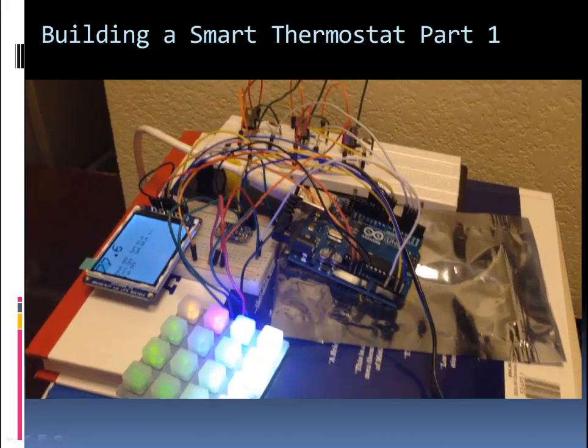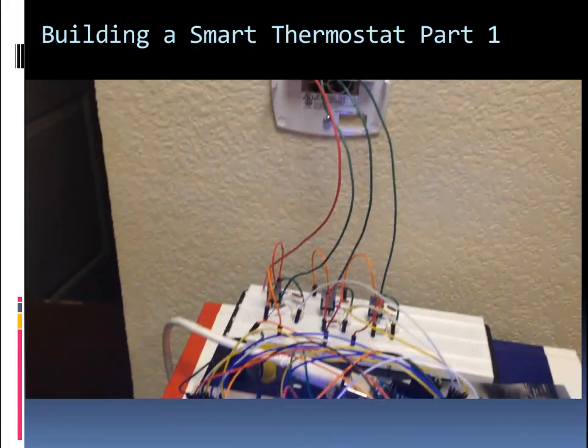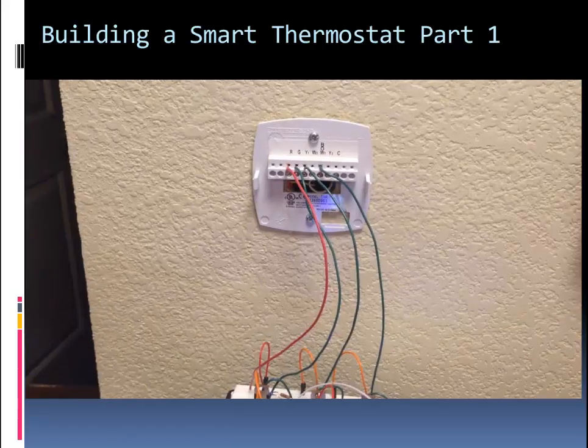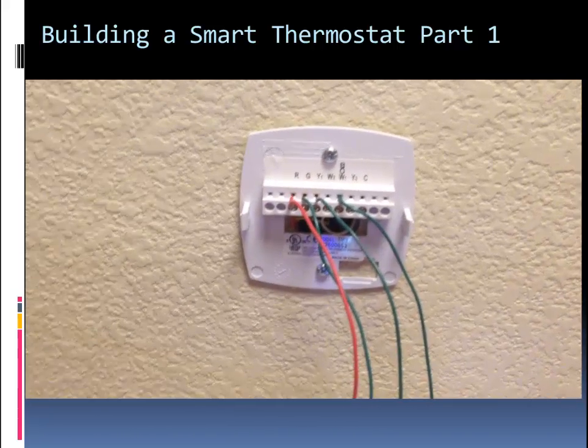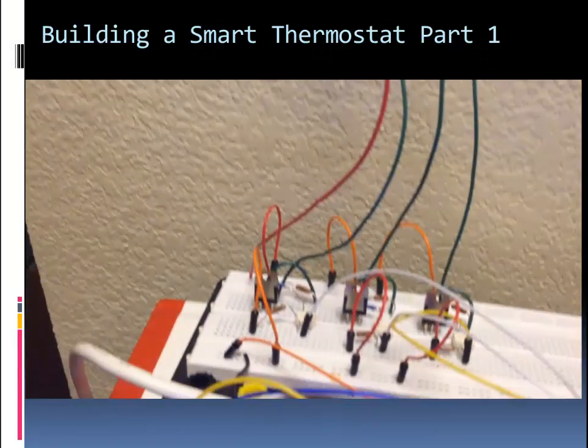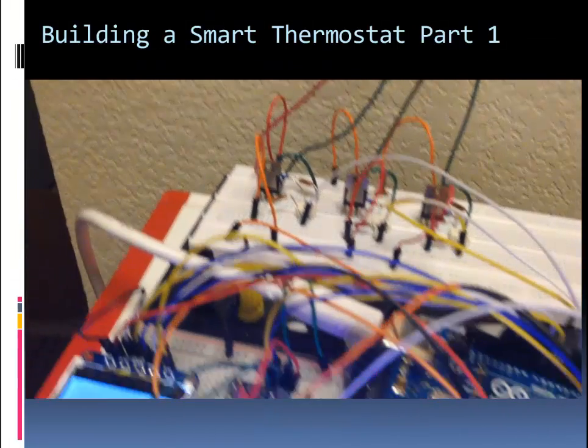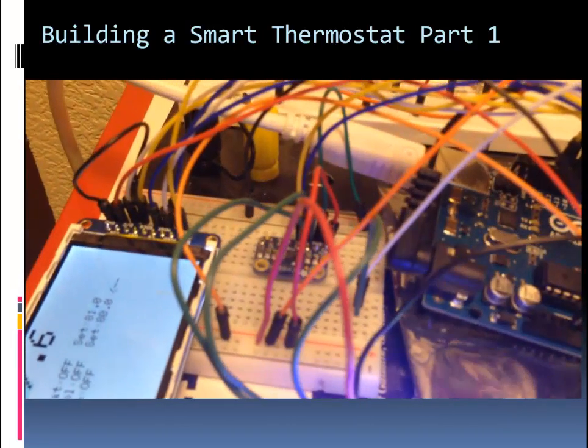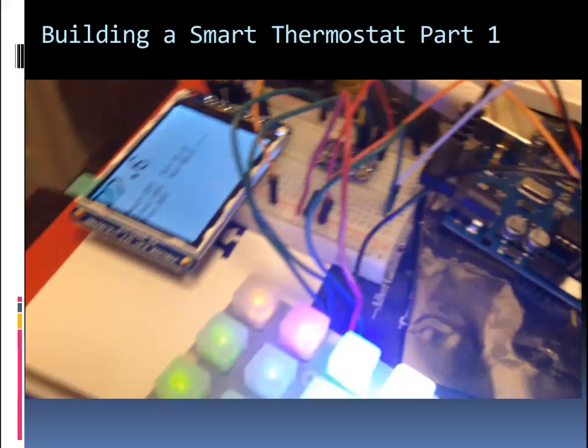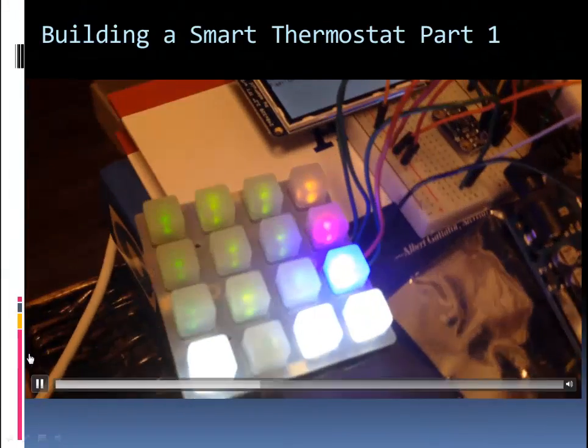Here's our whole prototype of our design put together. It's connected to the interface of the HVAC system in my condo. We can see the R, the G, the Y1, the W1, the wires going down to the TRIAC switches. You can see the Arduino UNO, the temperature sensor, the display, and the Trellis.